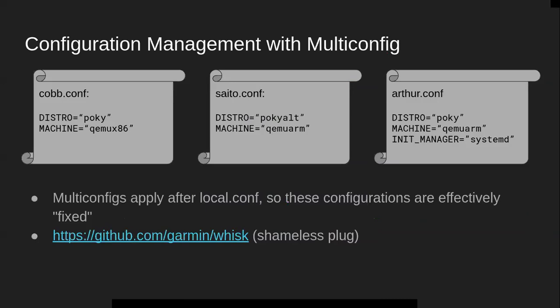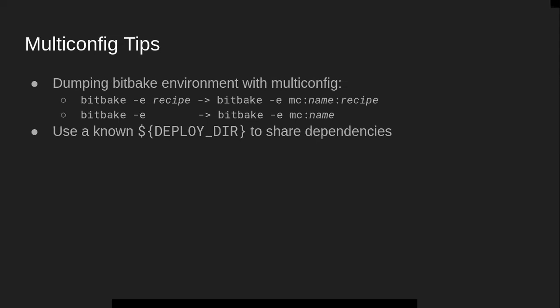A couple of final tips about multi-config: you can dump the BitBake environment with multi-config just like you would without it. If you would do 'bitbake -e recipe' to dump the environment for a given recipe, you can dump that recipe in a specific multi-config by adding the 'mc:multiconfig-name:' prefix, just like you would when building the recipe. To dump the base configuration environment you can use 'bitbake -e mc:multiconfig-name:' with no recipe suffix.